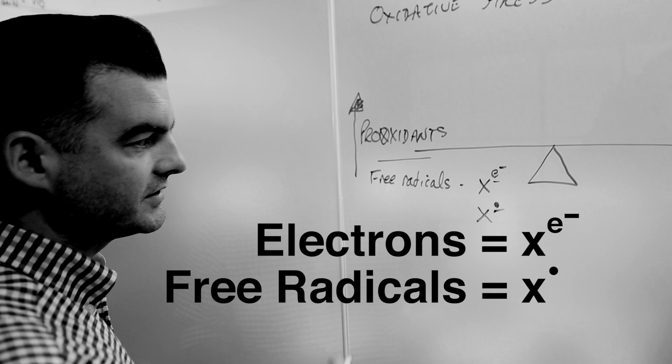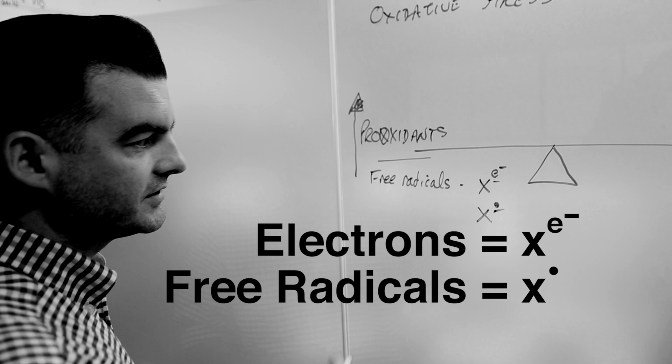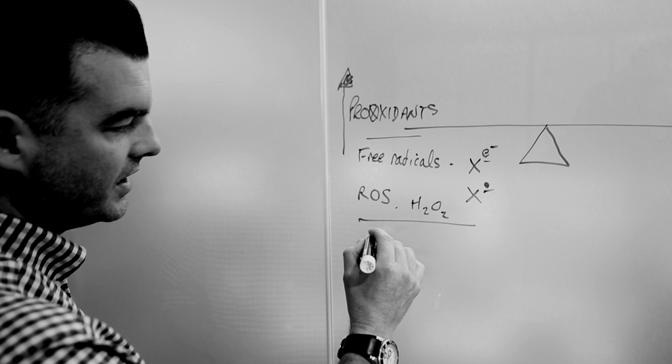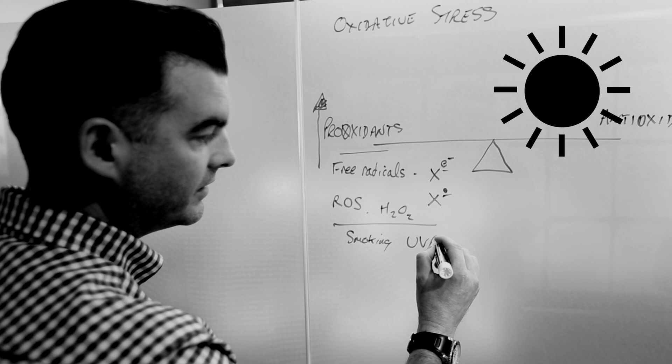free radicals are denoted as a dot - that's an electron, but you call it a free radical because it's got a dot on it. Then there are reactive oxygen species, like hydrogen peroxide. Various sources of these reactive compounds can be smoking, exposure to sunlight - that UV radiation in sunlight,